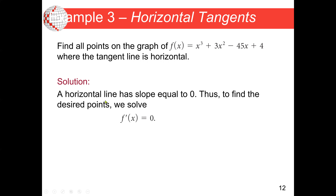The horizontal tangent line has slope equal to zero. To find the desired points, we solve for the derivative of f(x) equal to zero. First, we find the derivative of the function using the power rule: the derivative of x³ gives 3x squared, 3x² gives 6x, −45x gives −45, and the constant 4 gives zero. So the derivative is 3x squared plus 6x minus 45. In our previous lectures we covered power rules — it's very important to know.